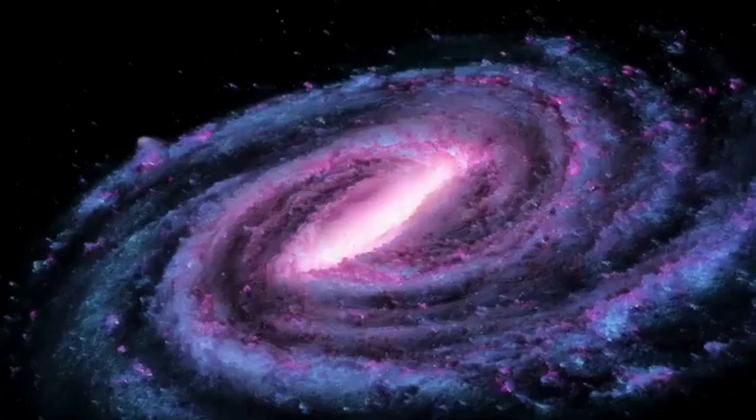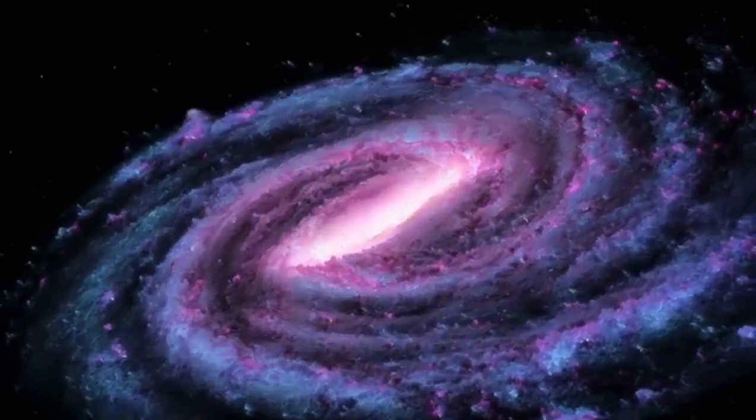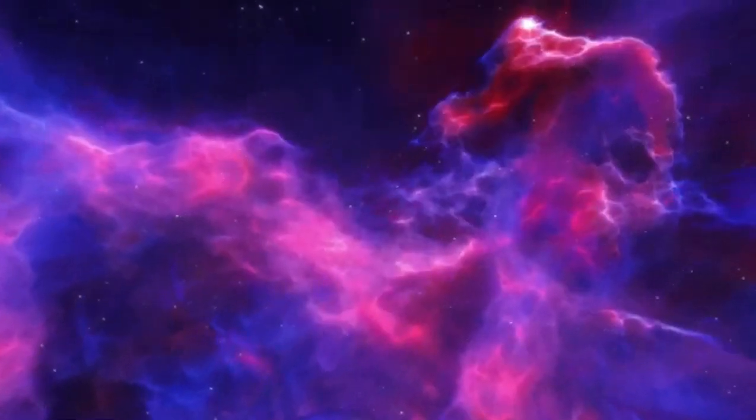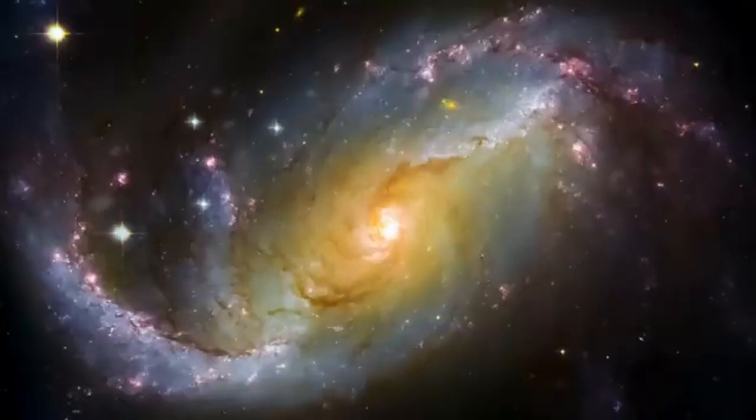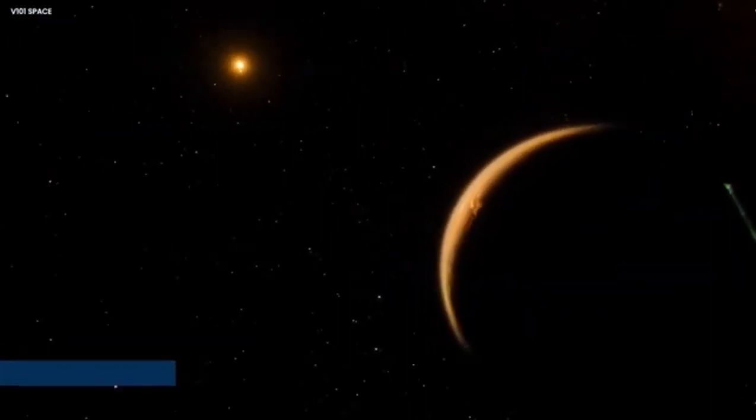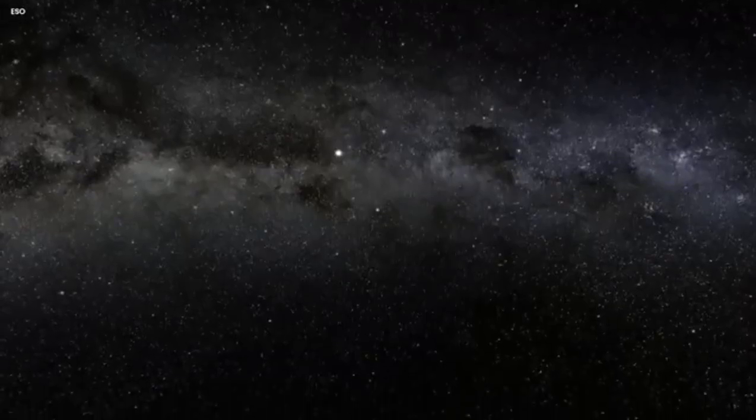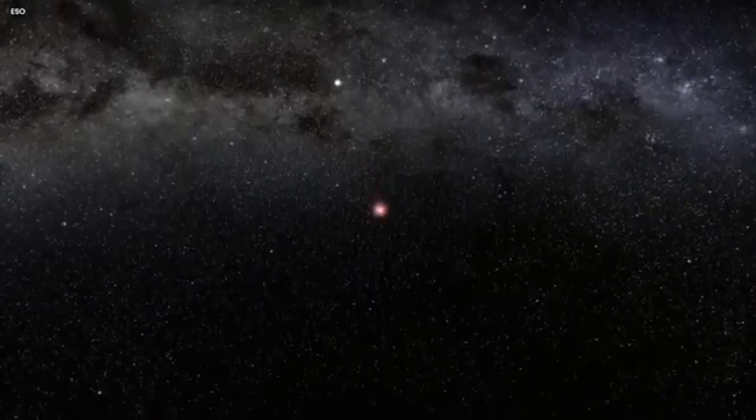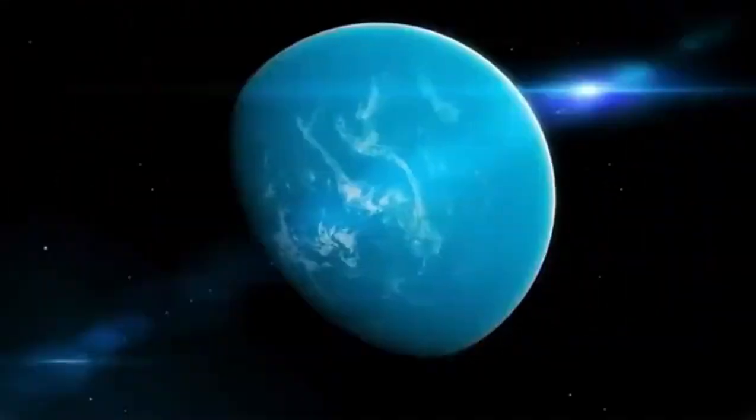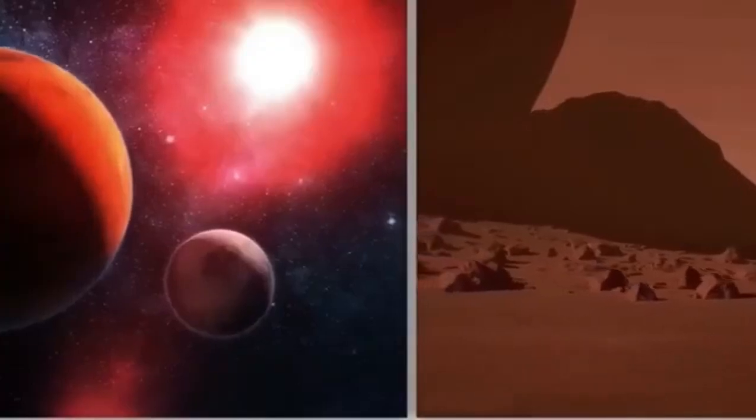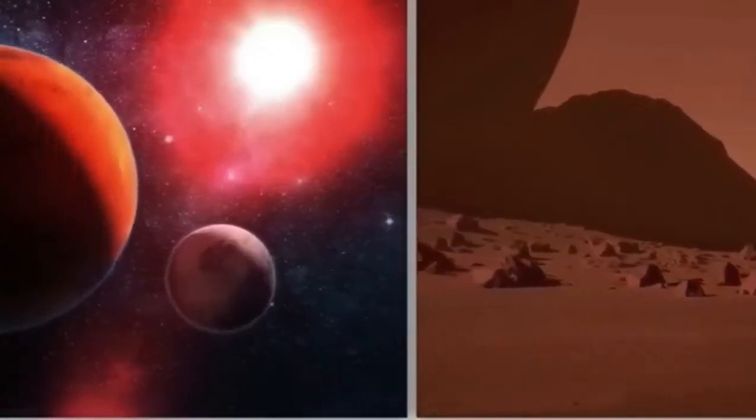First you might find yourself asking what even is Proxima b? Proxima Centauri b, or just Proxima b, is sometimes referred to as Alpha Centauri cb. It is a super-Earth exoplanet, and it orbits an M-type star. Super-Earth exoplanet, M-type star, confused yet? Do not worry, since this video will quell all of your burning questions. Super-Earths are a class of planets that are more massive than Earth, yet lighter than ice giants like Neptune and Uranus. They can be made up of gas, rock, or even a combination of both.